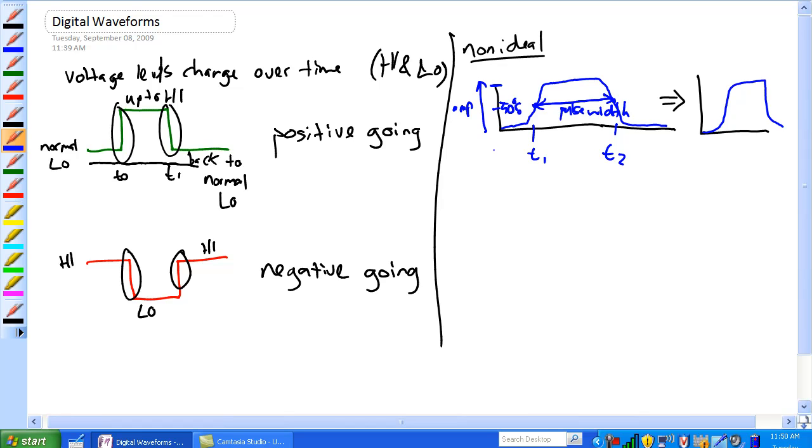Let's redraw this. That's our max amplitude. That's 90%, that's 10%. We'll draw our dotted line here. This right here is the rise time for a non-ideal pulse. Same thing here on this side - that's the fall time.